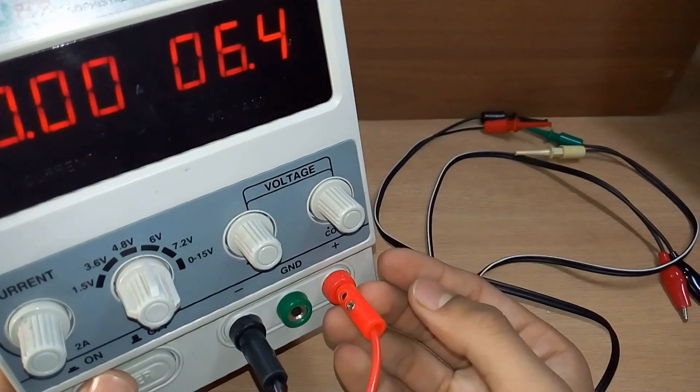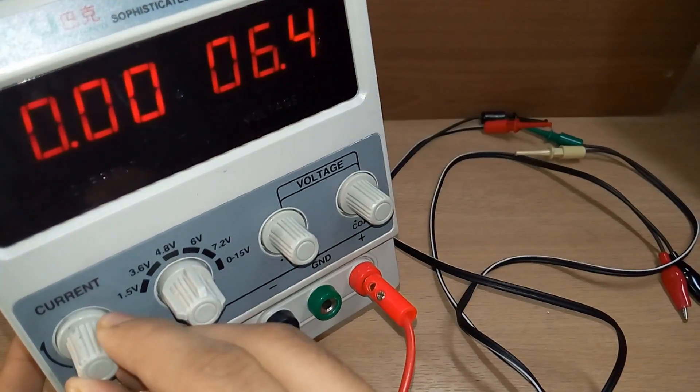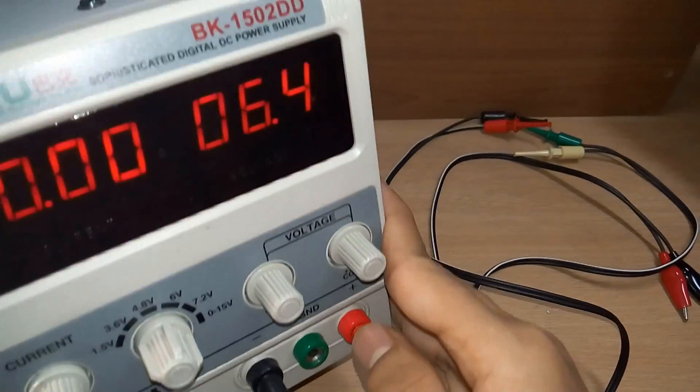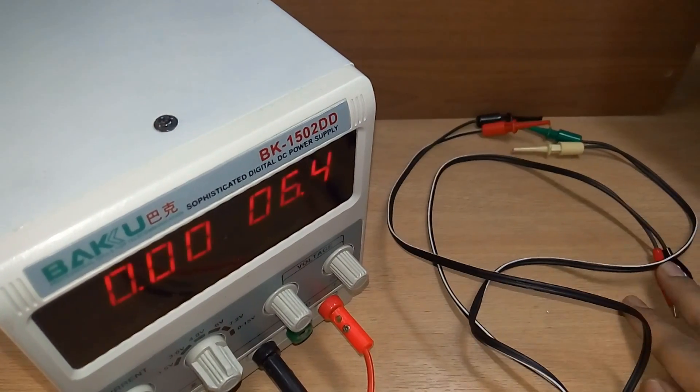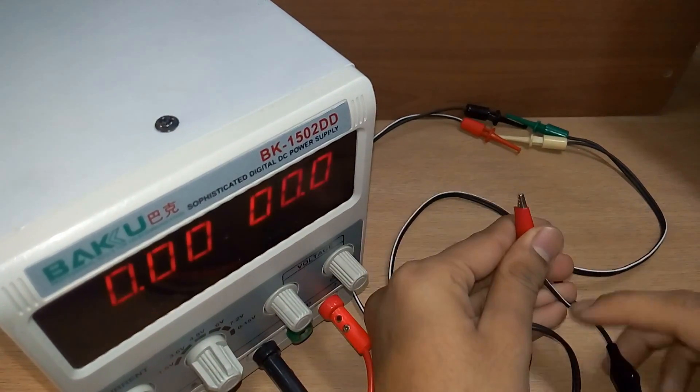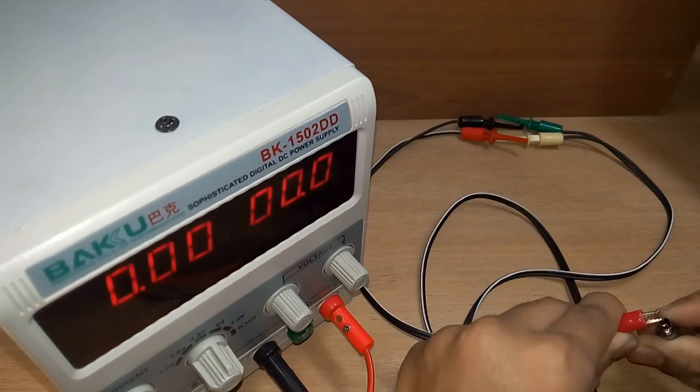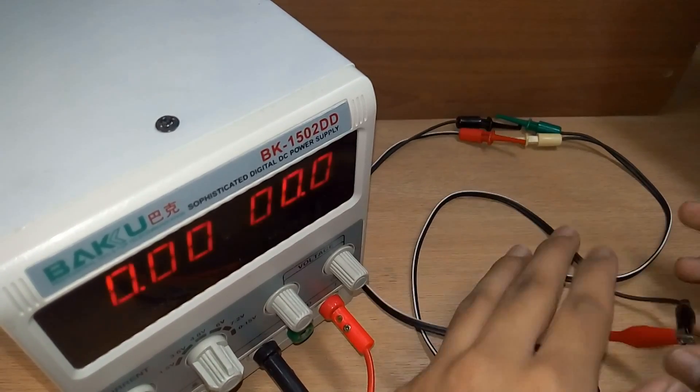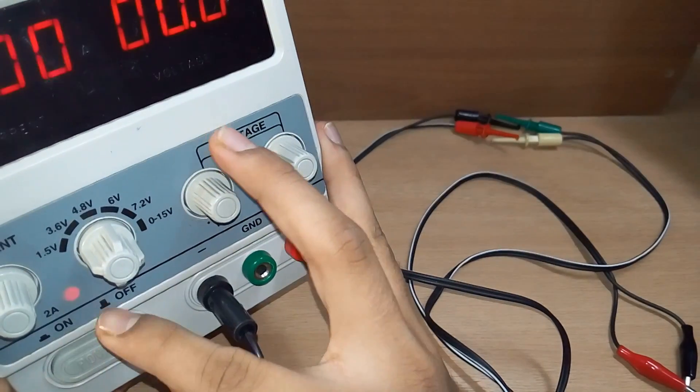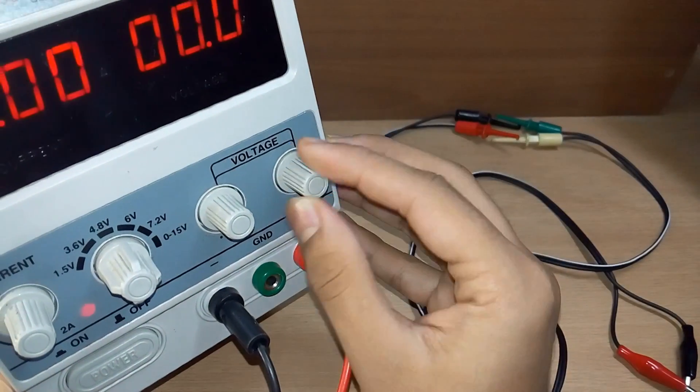We see that in the current there is also an LED. When we short the two terminals of the positive and negative and we increase the voltage, an LED lights up which indicates the short circuit.